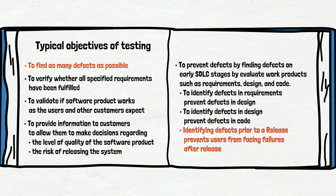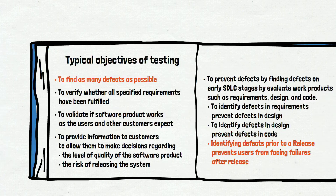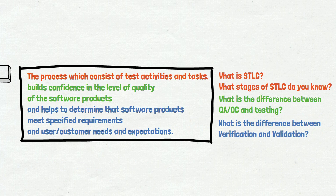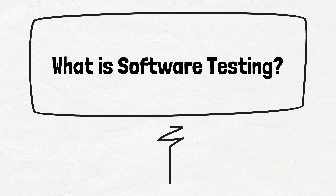You can pause the video and read all objectives one more time. Also, you can pause the video and read the software testing definitions one more time — the first one is the ISTQB definition, the second is our definition. You can check other videos related to this question, like: what is the difference between verification and validation, or what is the difference between QA, QC, and testing? As we said, most likely these will be the follow-up questions. That's all for now — it's our answer to the question: what is software testing?